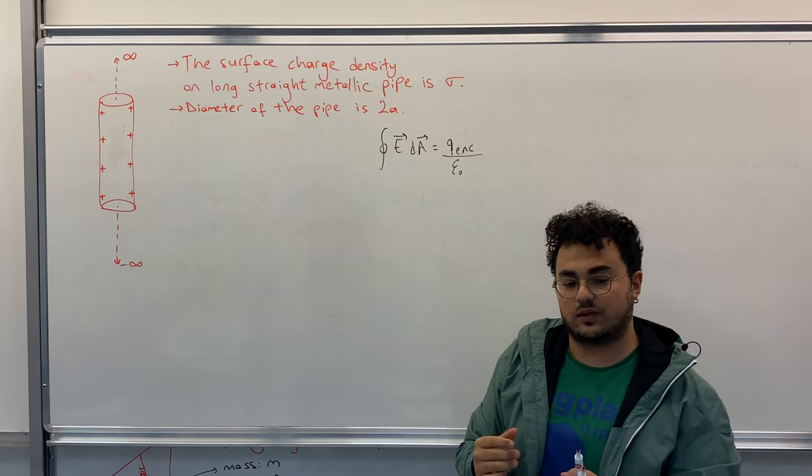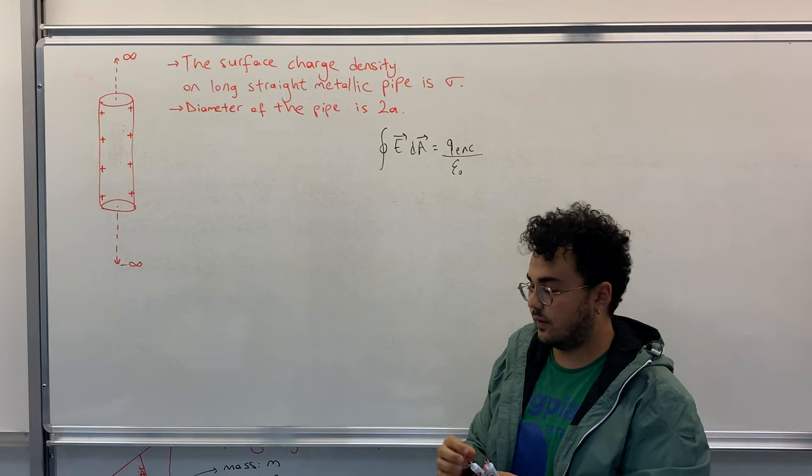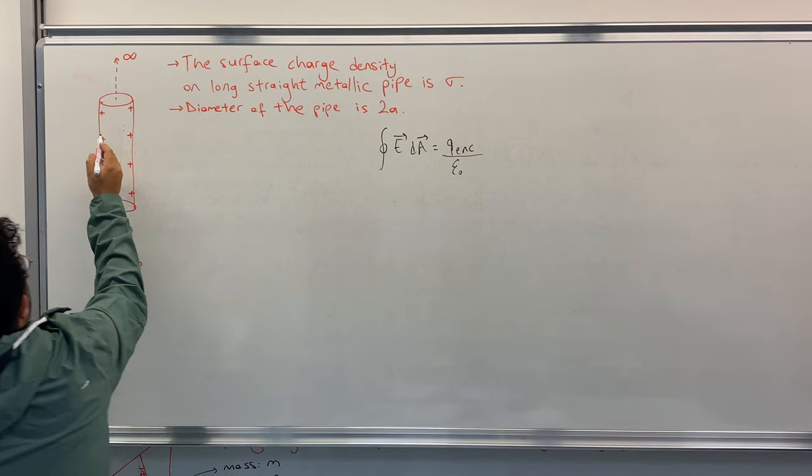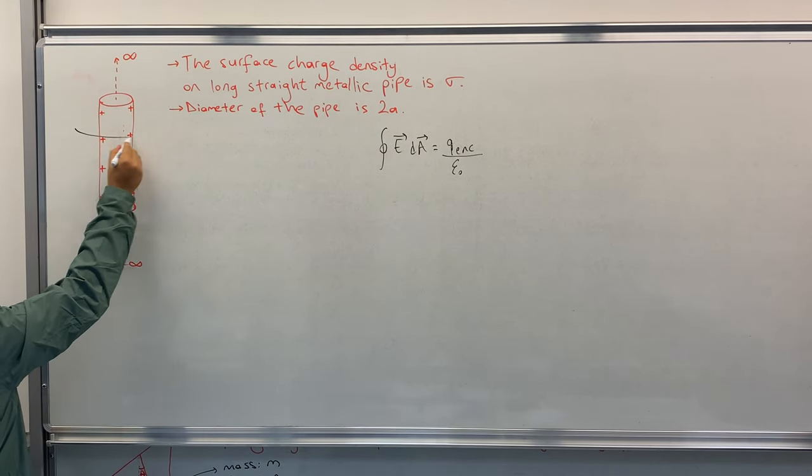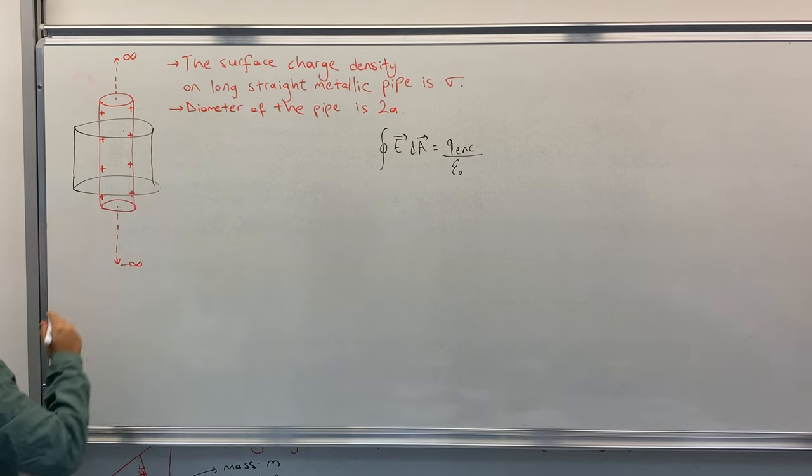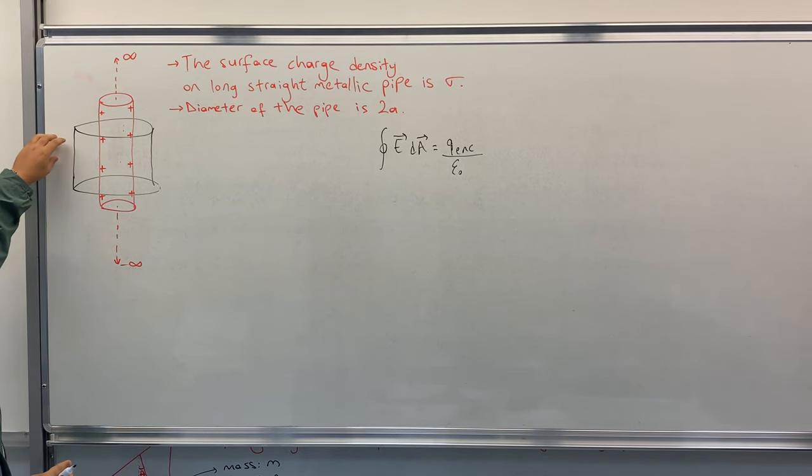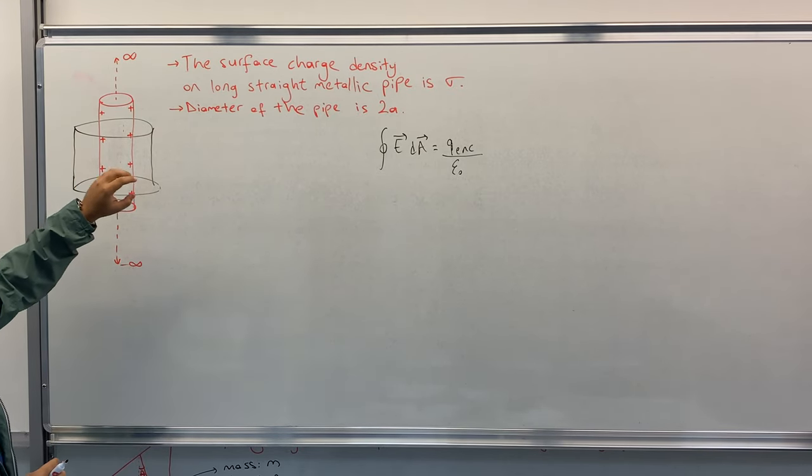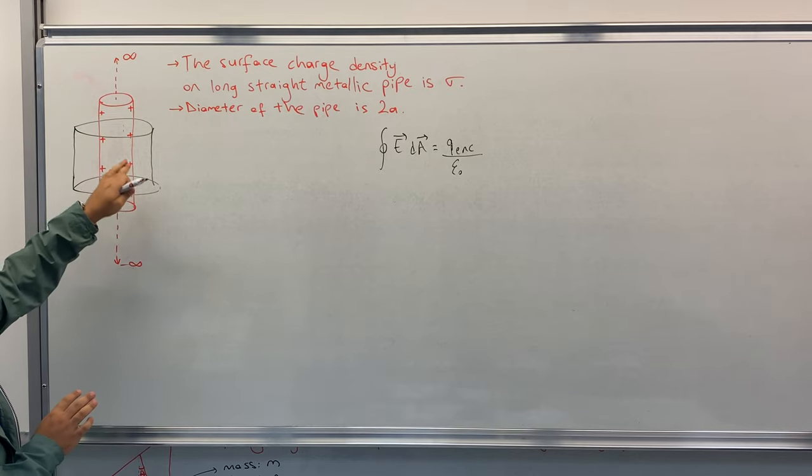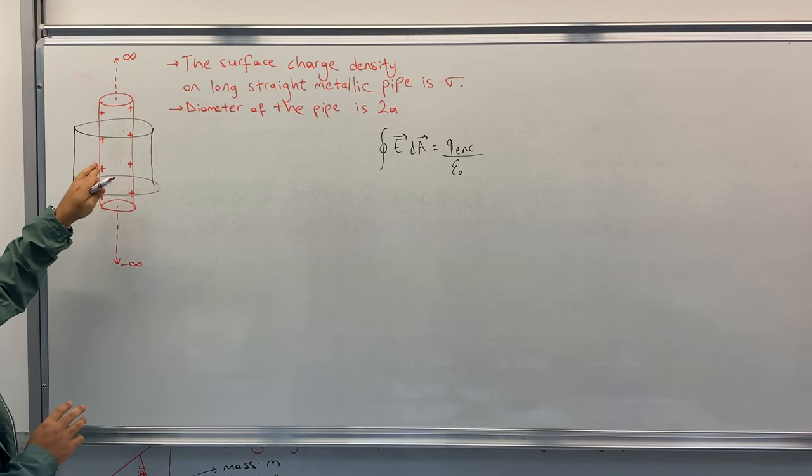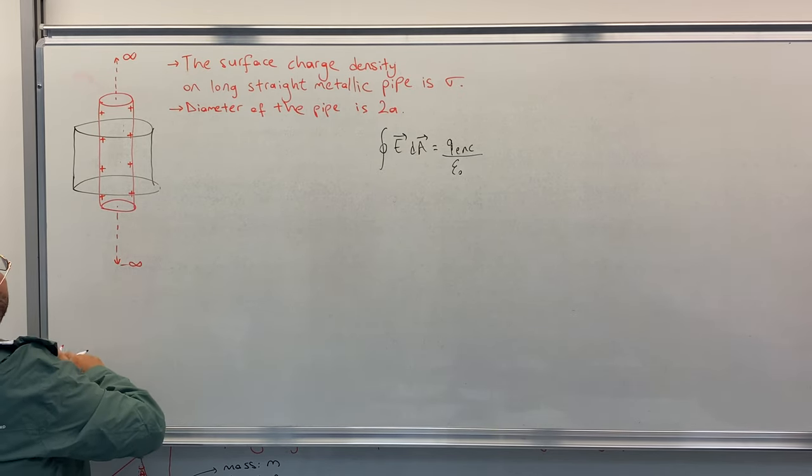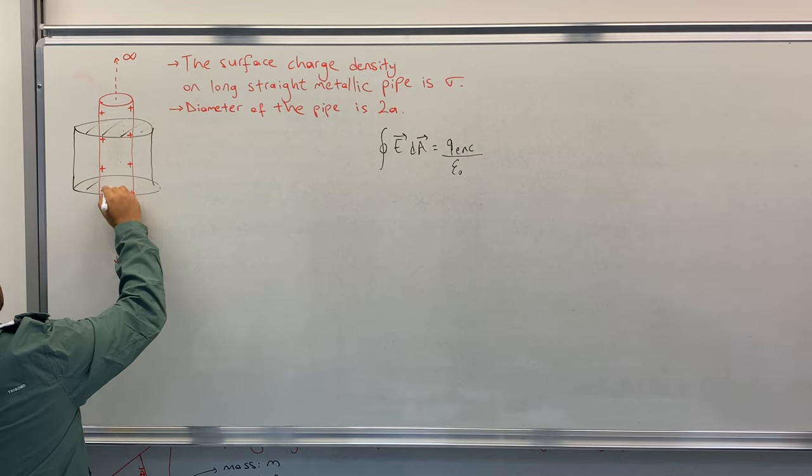And therefore, inside of the pipe there is no electric field. For the outside, in order to solve this question easily, we need a symmetry. When we assemble the closed volume, I will draw a cylinder outside like this. So in this way we have symmetry.